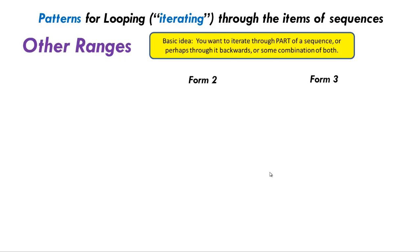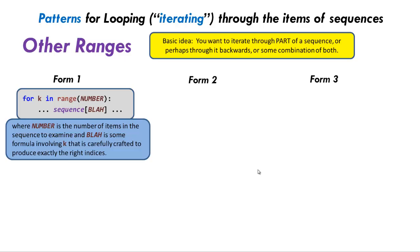In our second example of iterating through a sequence, we'll look at three forms of an idea — the other ranges pattern — which is to iterate through part of a sequence, or maybe go through the sequence backwards instead of forwards, or some combination. Here's the first of the three forms. We'll have a for loop with a variable k in range, where we give just a number — the number of items we want to examine in the sequence. And then inside the body of the for loop, we refer to sequence bracket blah, where blah is some formula involving the loop variable k carefully crafted to produce exactly the right indices.